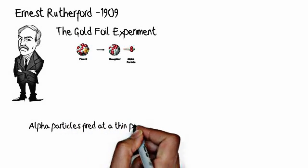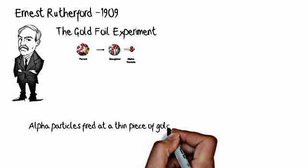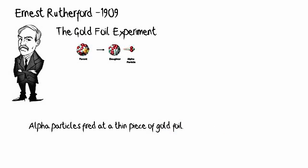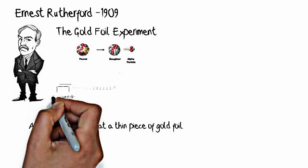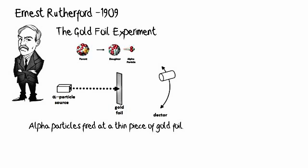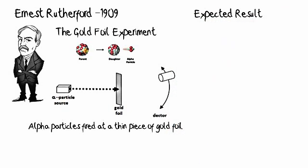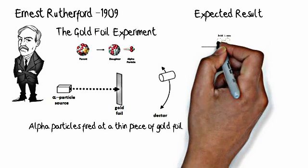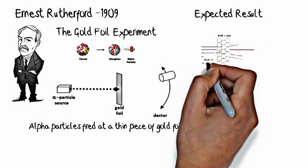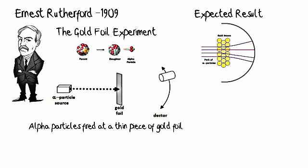And what he did is he took these alpha particles and he lined them up so that they would fire at a thin sheet of gold foil. And what he expected to have happen was for the alpha particles to shoot straight through the gold foil, because Thompson's model of the atom is the model that we currently have. And he expected that these particles would just fire right through that positive cloud. As you can see from the expected result.